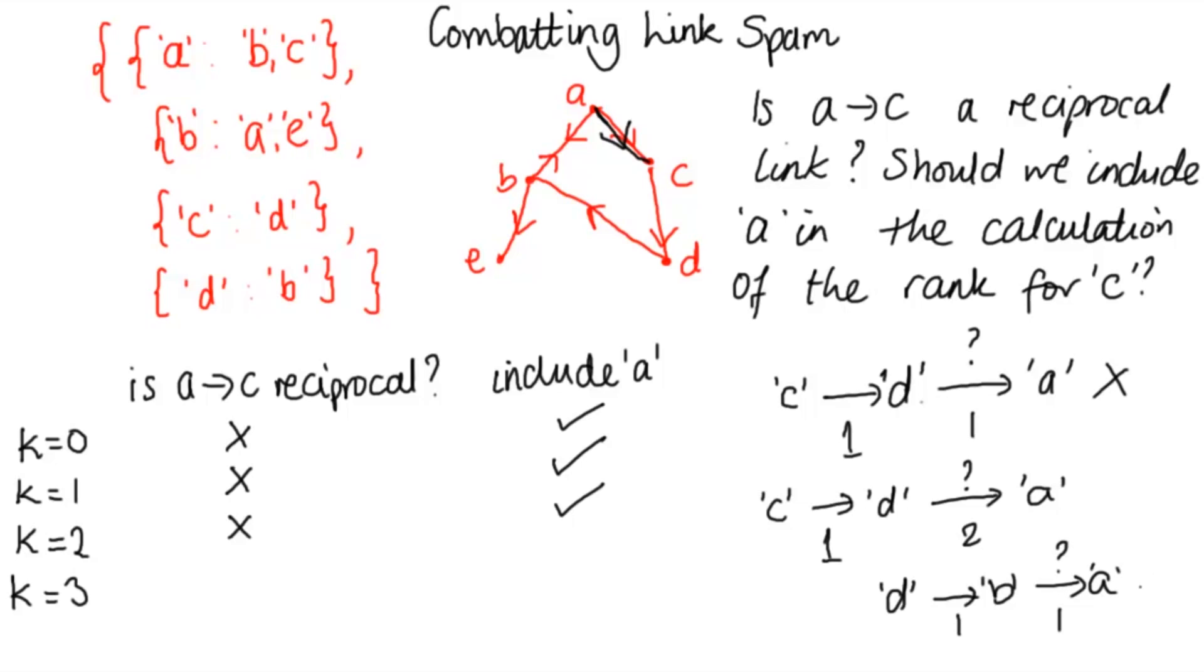Yes, we can because there's a direct link from B to A, which means that AC is reciprocal and we should not include A. If K is greater or equal to three, then there's definitely a path of length at least three in there, which means we should not include A for any values of K greater than or equal to three.